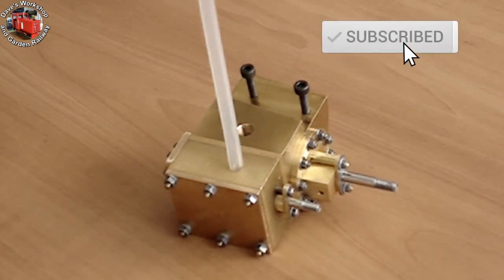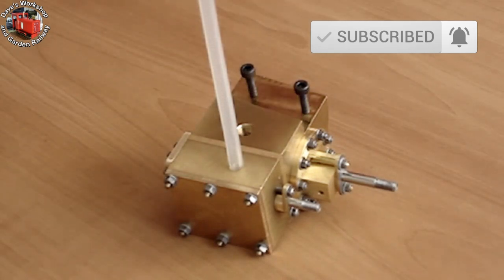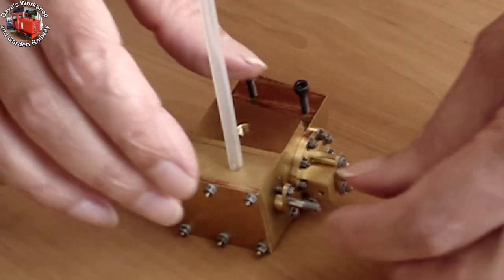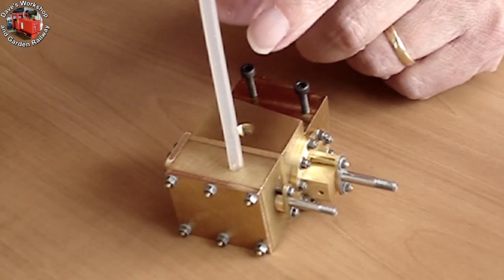Welcome to part 12 of the live steam Charles Loco build and welcome to Dave's workshop on Garden Railway. All the fasteners for the cylinders have been received and fitted.